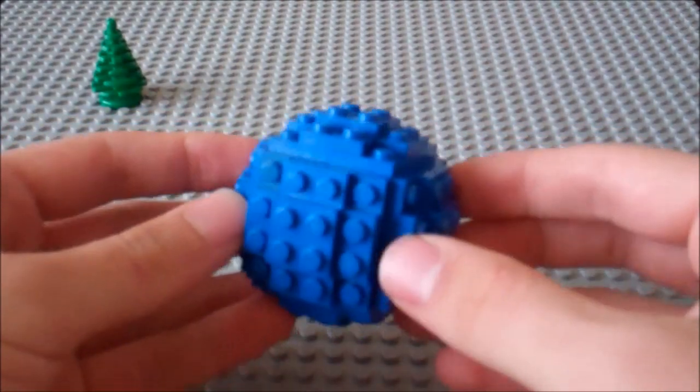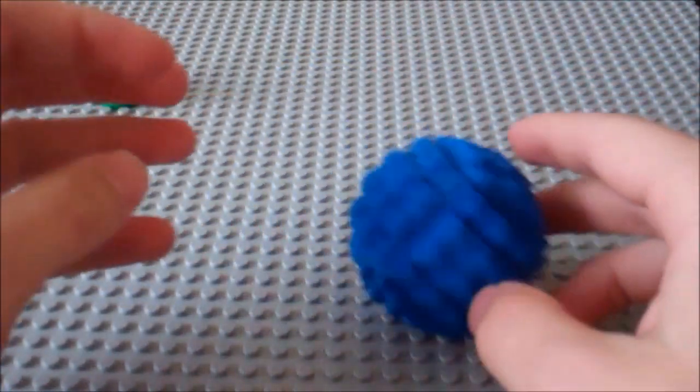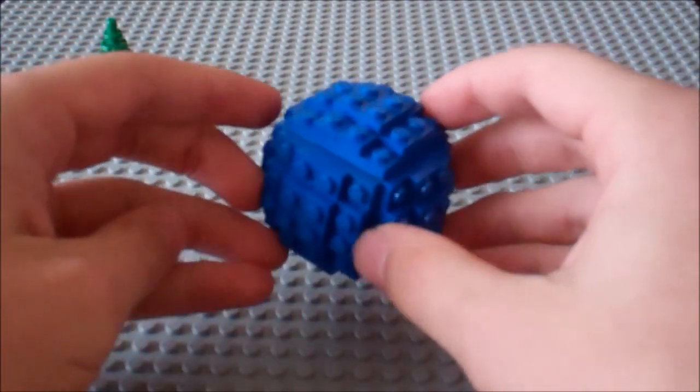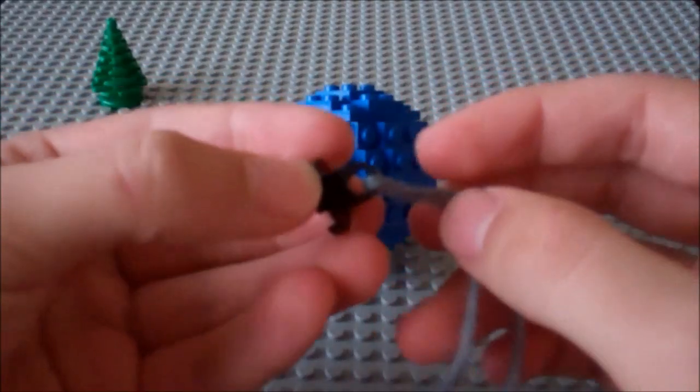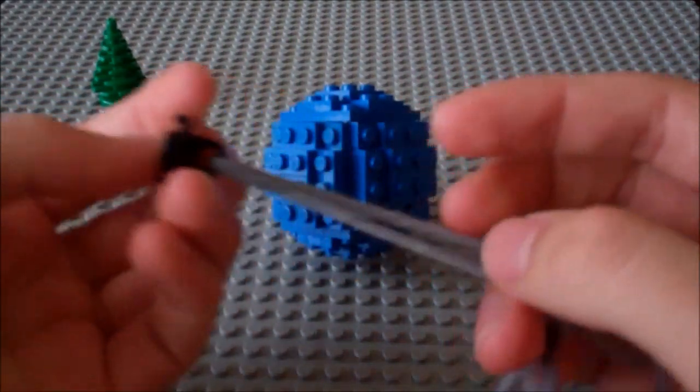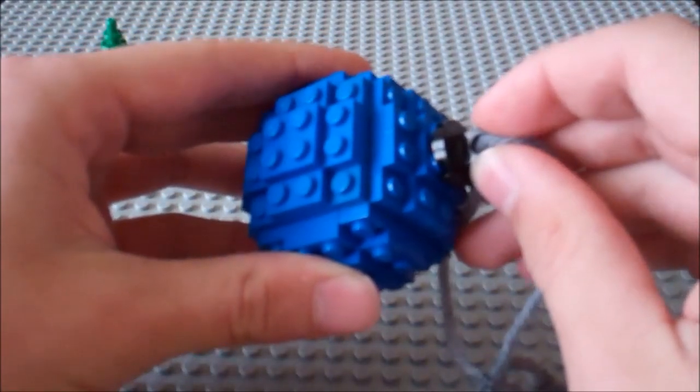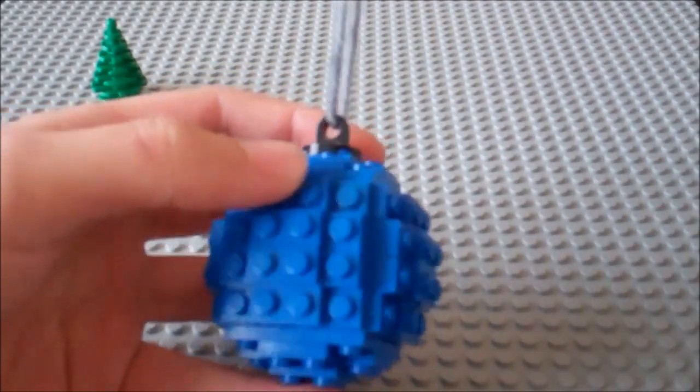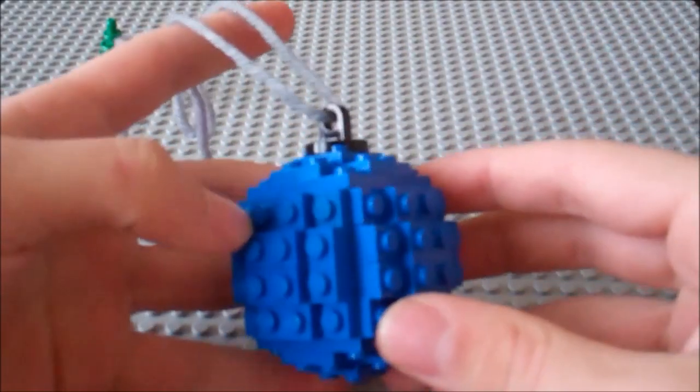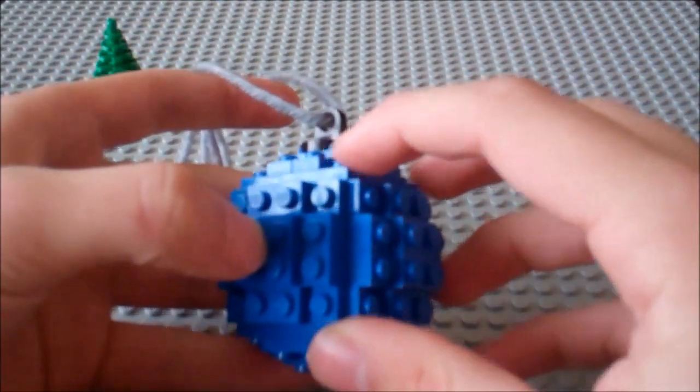So if you wanted to you could stop right here and just have a fun sphere to play with. But since this is a Christmas ornament I'm going to get one of these pieces so that I can hang it from a string and then it'll go on the Christmas tree. Then I'll just plop that on the top. And there you go, a LEGO Christmas ornament. So thank you guys for watching, I'll see you guys next time and Merry Christmas.